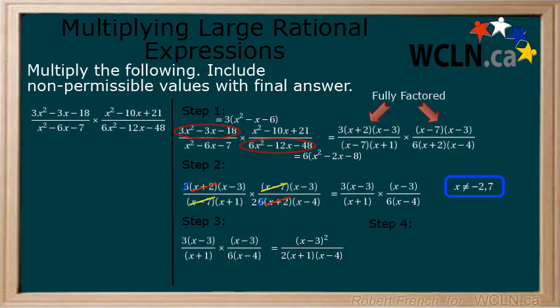Step 4. Include non-permissible values with your answer. Take the denominator, make the factors equal to 0 and solve. Add the non-permissible values from step 2 and step 4 and you're done.